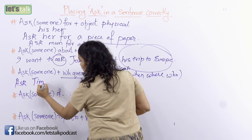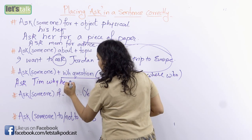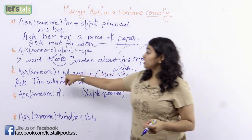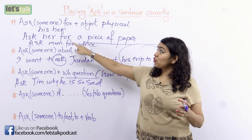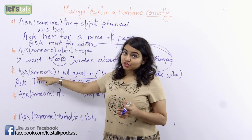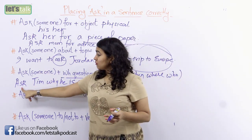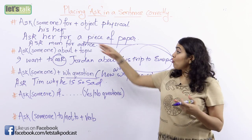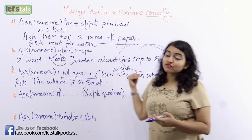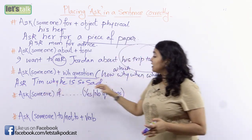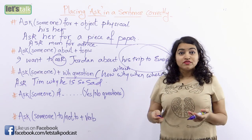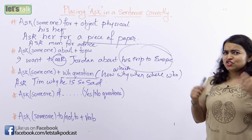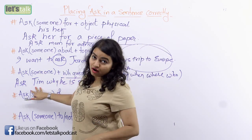For example: 'Ask Tim why he is so sad.' When you use a WH question, you do not need 'about' or 'for' after the person's name. You go straight from the person to the WH question. You could also say: 'Ask Ravi why he is not participating', or 'Ask Sharon what she is eating.' That is how you use 'ask' with a WH question.